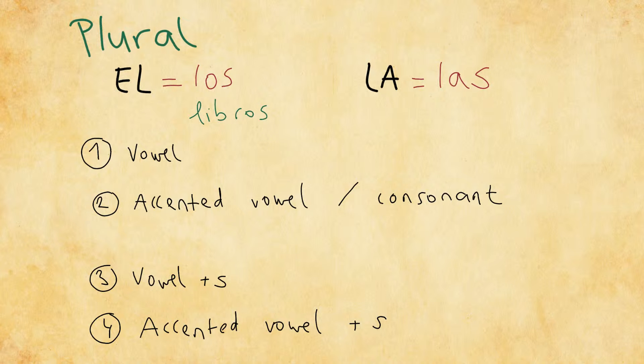For a feminine word, let's use the word tía, which means an aunt. So la tía, las tías, if I have more of them. So las tías.